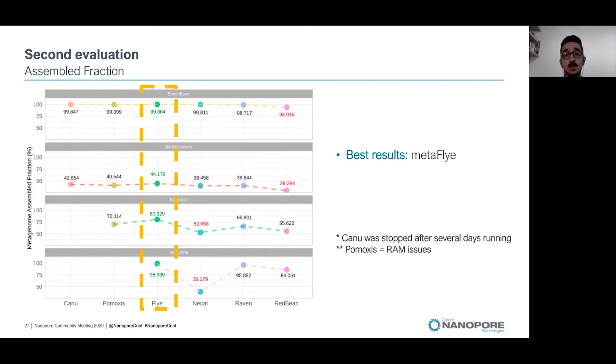Again, best results were obtained by MetaFlye, and the smaller fraction of metagenomes was recovered by RedBean in some cases or by wtdbg2 in other cases. I would like to highlight that Raven worked relatively well in all the datasets, and Canu and Pomoxis were performing well, but we had these issues that I mentioned before.